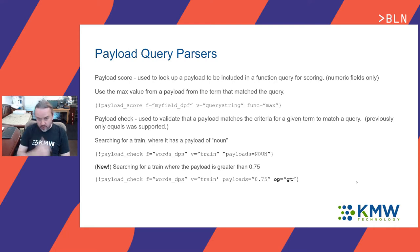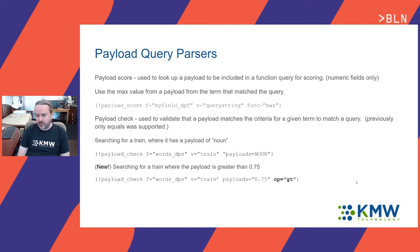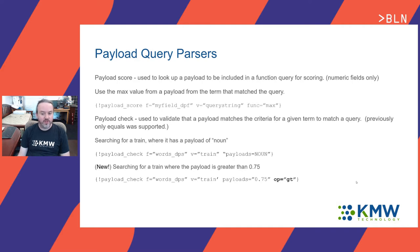What we did is we extended this payload check query parser to add an additional parameter, the operation OP, which will match against the payloads. Here we specified GT representing a greater than example. So if we imagine having the word 'train' with a payload of 0.75, we can search for documents that contain 'train' where it had a payload greater than that value.